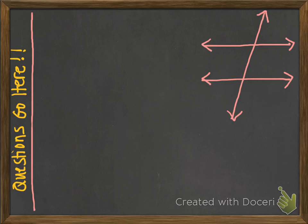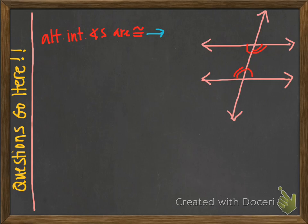Let's consider two lines cut by a transversal. If the alternate interior angles happen to be congruent — for example, this angle is congruent to that angle, or this angle is congruent to that angle — then we have parallel lines. So if alternate interior angles are congruent, then we've got parallel lines, and I would show that with little arrows on the picture.